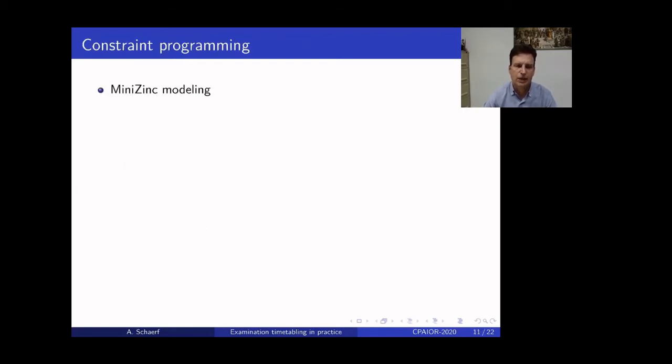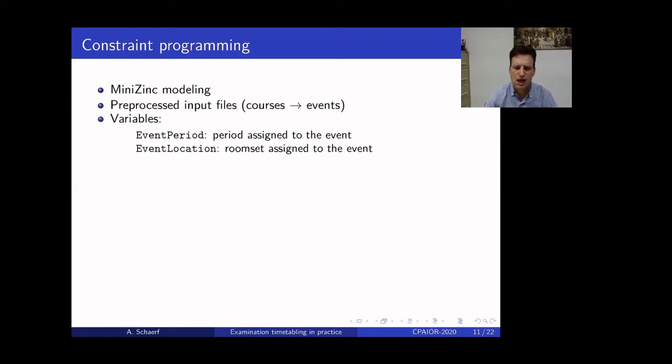Okay. For constraint programming, we use MiniZinc. So, we wrote the MiniZinc model. So, in order to use MiniZinc, we have to preprocess the input file. So, the input files are considered courses and exams, whereas these are preprocessed, flattening it into single events. So, distances between events are made explicit in the preprocessed DataZinc file. And then, the variables are the same as in for local search. So, we have a vector of period assigned to events and a vector of locations assigned to events.